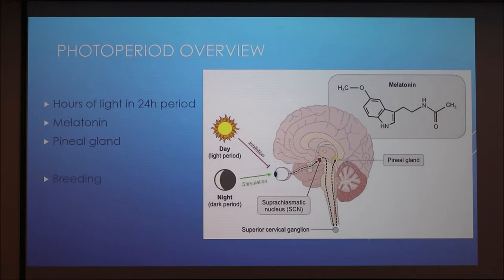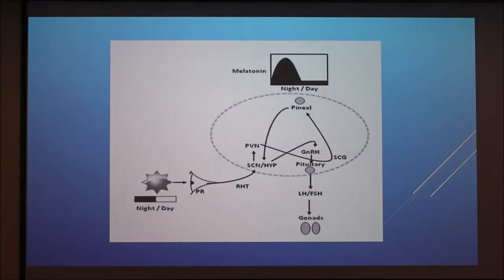In animal sciences, the main application of photoperiod is with breeding. This picture here shows the effect on breeding. So we have light input which is perceived through the eyes or the retinal photoreceptors and it travels on the retinal hypothalamic tract to the suprachiasmatic nucleus of the hypothalamus. There it follows the pathway to the pineal gland through the paraventricular nuclei and then superior cervical ganglion. The pineal gland tells the hypothalamus to secrete GNRH or gonadotropin releasing hormone which signals the pituitary to produce LH or FSH which are luteinizing hormone and follicle stimulating hormone which then affect the gonadal activity.